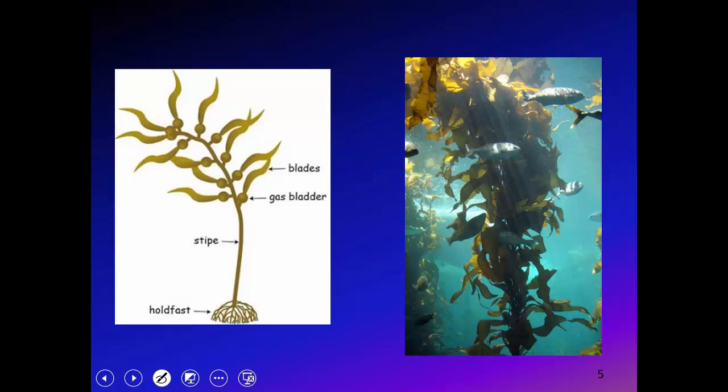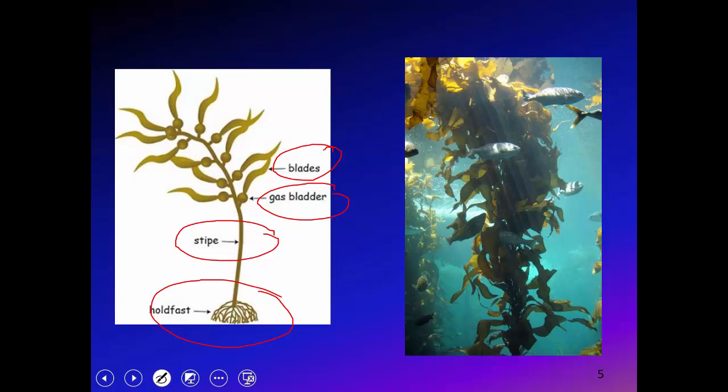Here's a schematic diagram of a kelp plant. The key parts include a root-like holdfast system, a stipe which is like the trunk, a gas bladder that keeps it upright in the water, and blades. Even though this plant looks like it has parts similar to a higher plant, it is in fact an alga, not a higher plant.